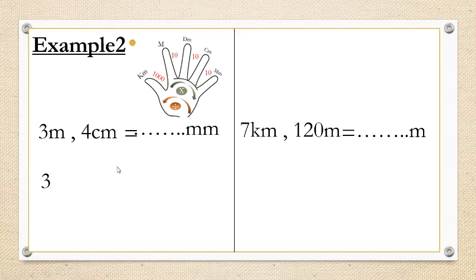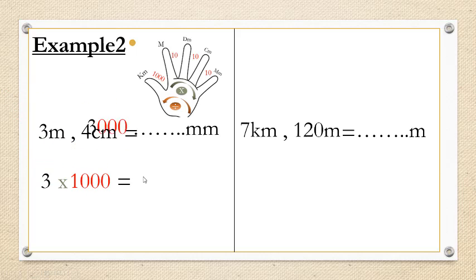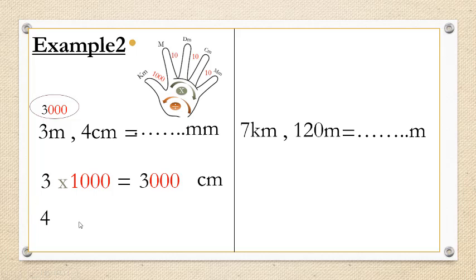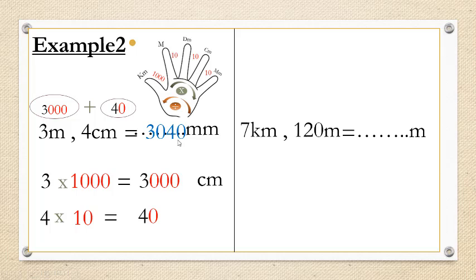Write down 3, then multiply or divide. Here we have meters and want millimeters — that's a large to small conversion — so we multiply. Times what? Count the steps: meter to decimeter is one, decimeter to centimeter is two, centimeter to millimeter is three — so three zeros, meaning we multiply by 1,000. Equal 3,000. Now take the 4 centimeters and change to millimeters. 4 times 10 equals 40. Comma means plus, so bring down 40 and add. The answer is 3,040 millimeters.